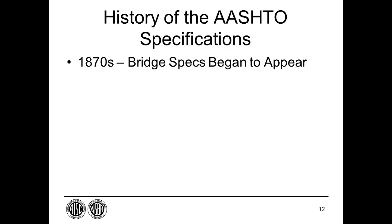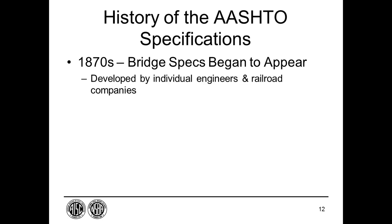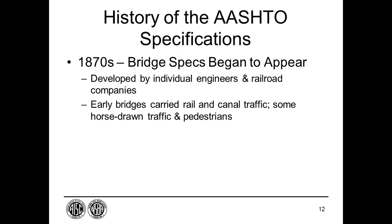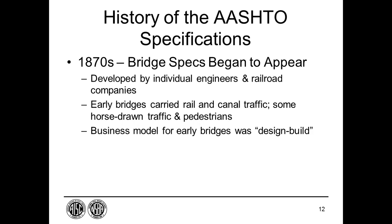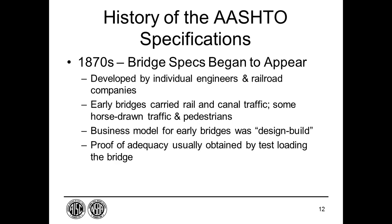Early bridge design specifications began to appear around the 1870s and were primarily developed by individual engineers and railroad companies. Early bridges carried rail and canal traffic and, to a limited extent, horse-drawn traffic and pedestrians. The business model for these early bridges was essentially design-build. Proof of the adequacy of the design was usually obtained by test-loading the bridge, and there was little in the way of coordinated design specifications except those developed by the builders themselves.